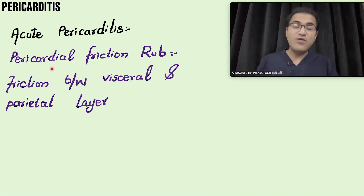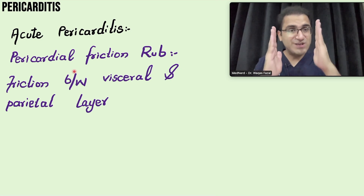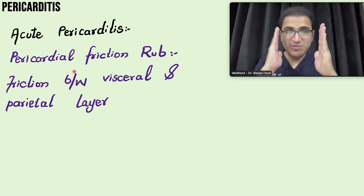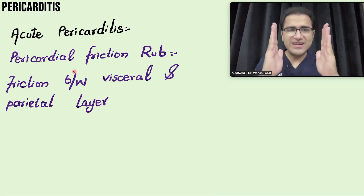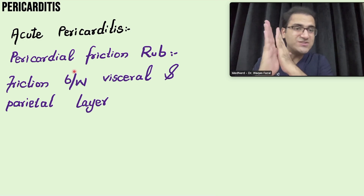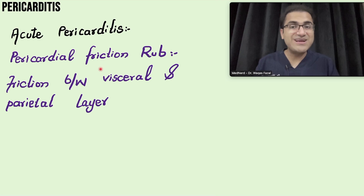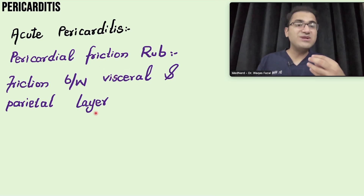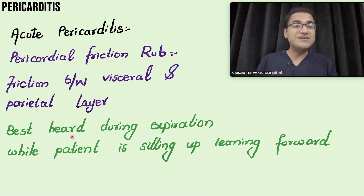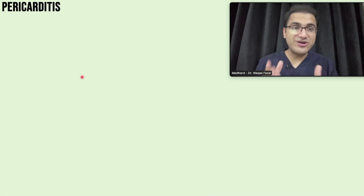On auscultation you will appreciate a pericardial friction rub. The pericardium has two layers — the inner visceral layer and the outer parietal layer. When these inflamed layers rub against each other, they produce friction and a characteristic sound called the pericardial friction rub. It is best heard at the left sternal border during expiration, with the patient sitting up and leaning forward.